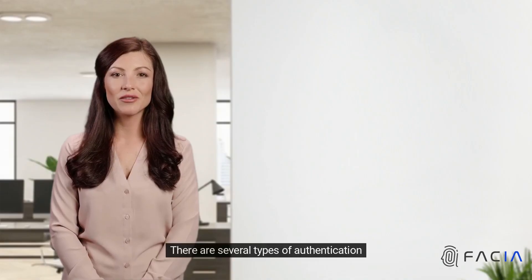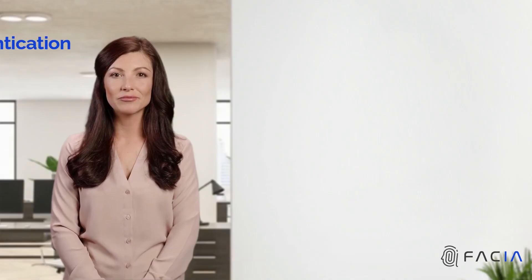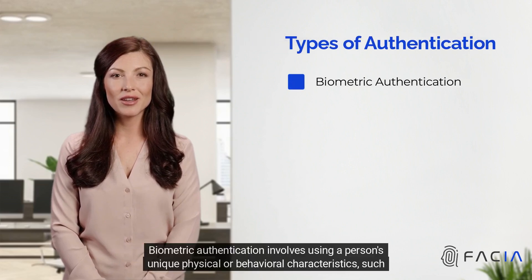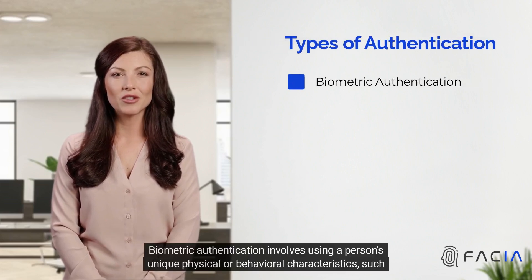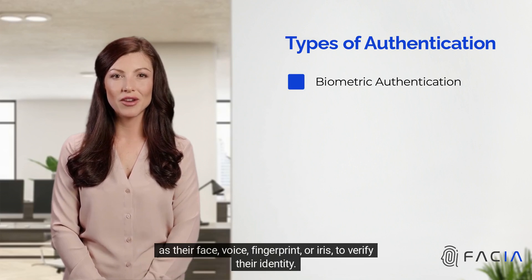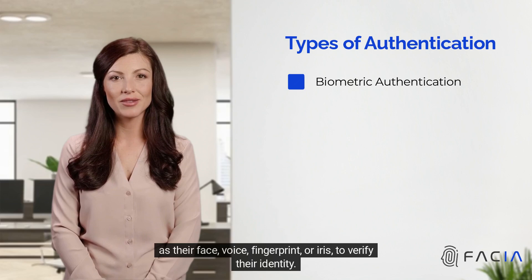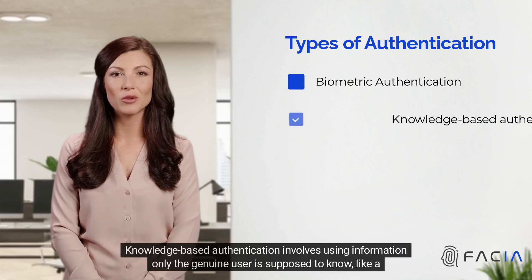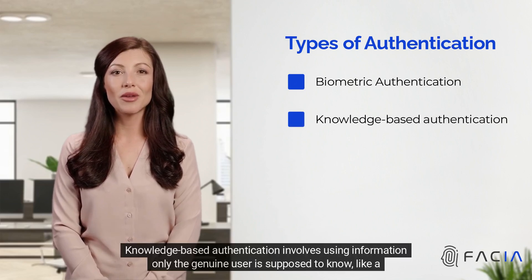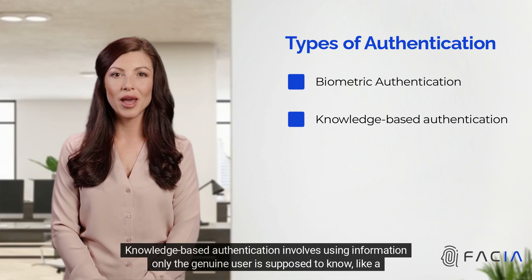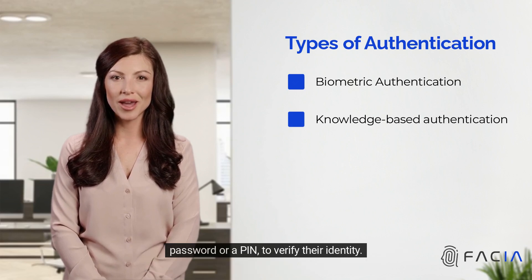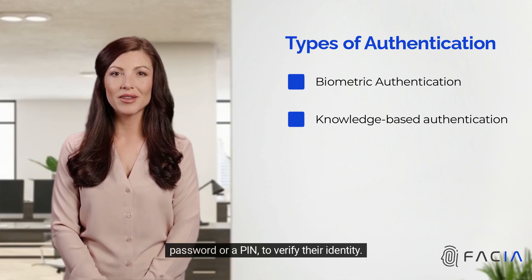There are several types of authentication. Biometric authentication involves using a person's unique physical or behavioral characteristics, such as their face, voice, fingerprint, or iris, to verify their identity. Knowledge-based authentication involves using information only the genuine user is supposed to know, like a password or a PIN, to verify their identity.